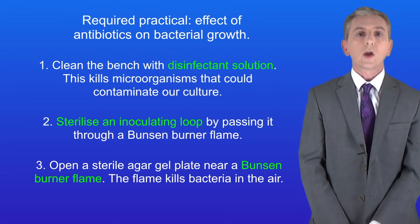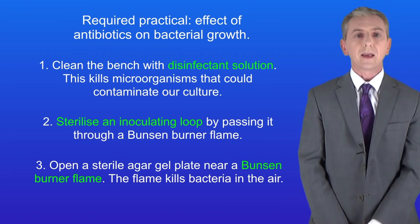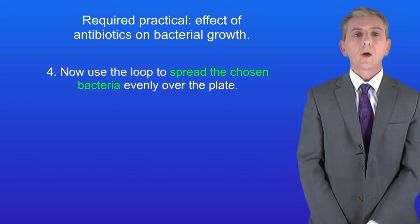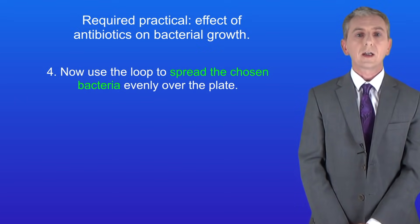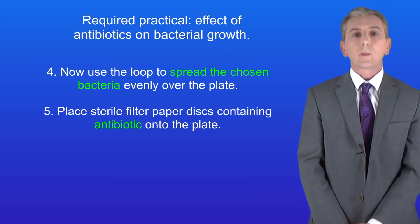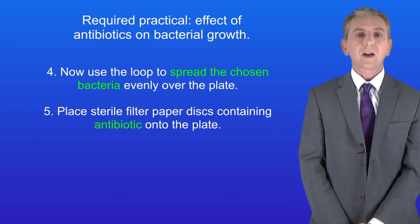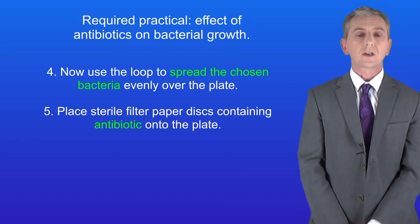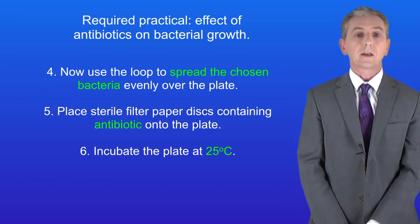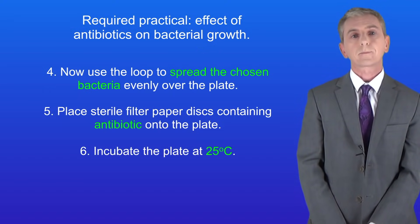Now we open a sterile agar gel plate near a Bunsen burner flame — the flame kills bacteria in the air. We then use the loop to spread the chosen bacteria evenly over the plate. Finally we place sterile filter paper discs containing antibiotic onto the plate. The plate is then incubated at 25 degrees Celsius.